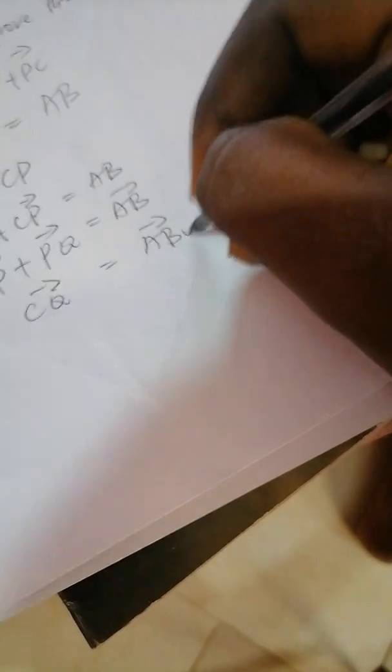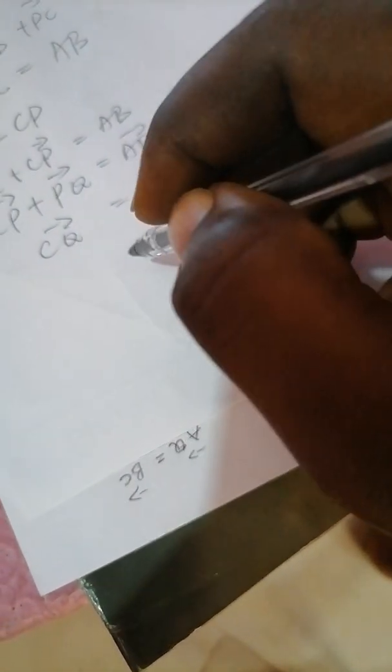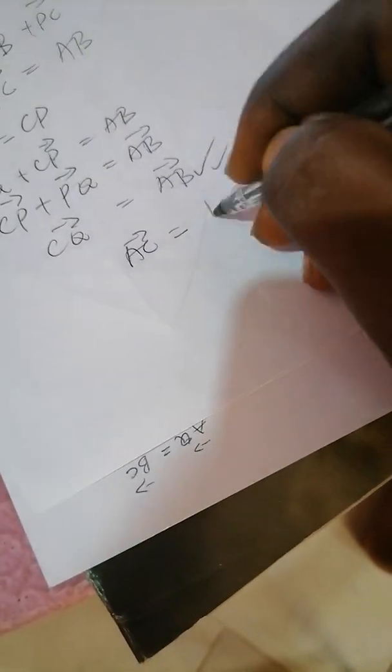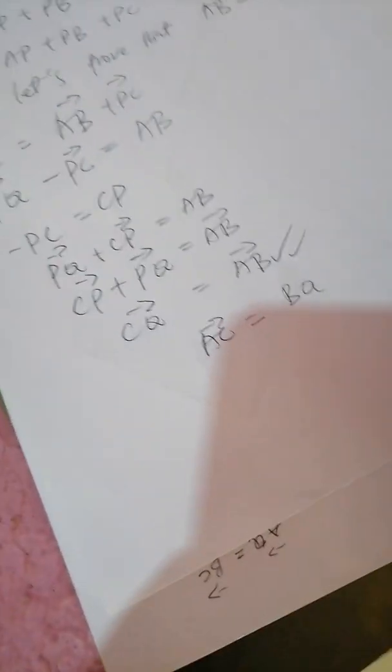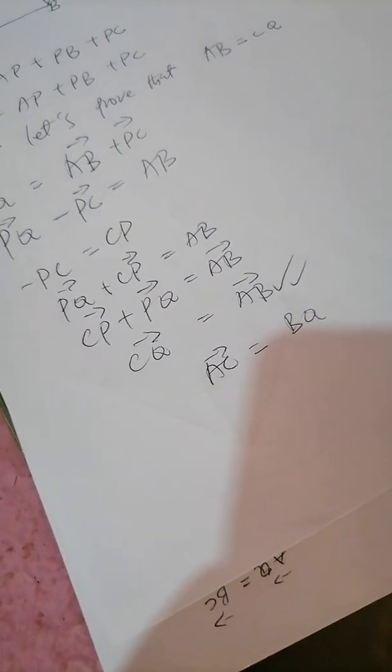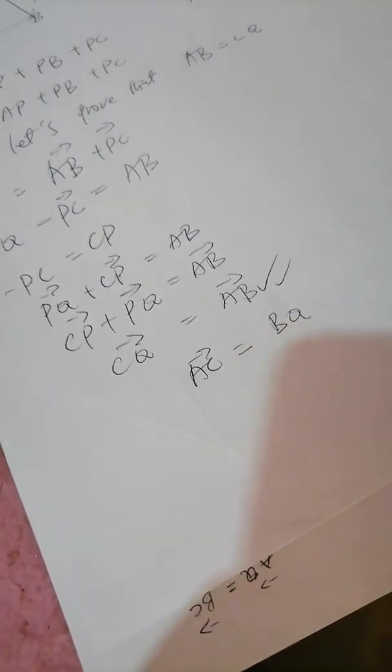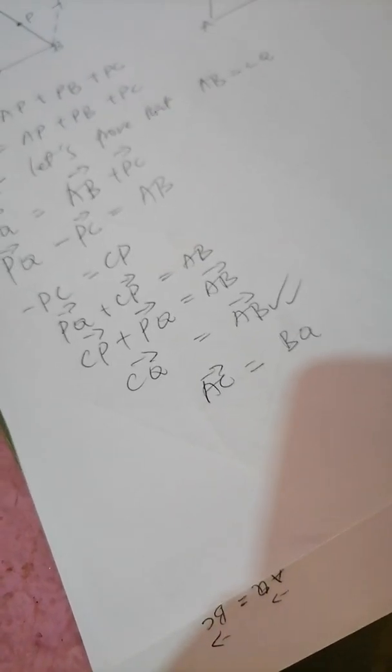Now the second part is to prove that AC is equal to BQ. We are going to use the same identity to prove that AC is equal to BQ. I'm going to leave that for you to do. Thank you very much.